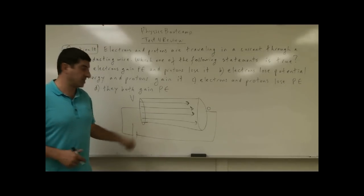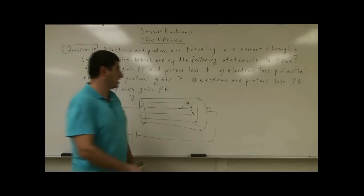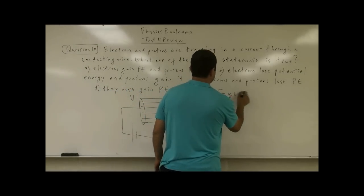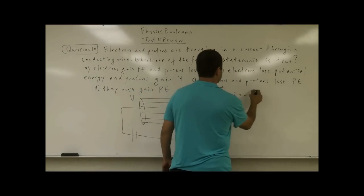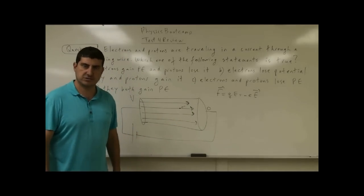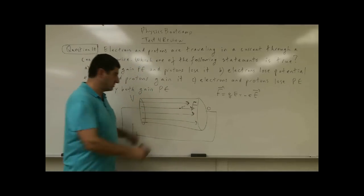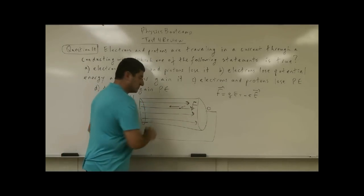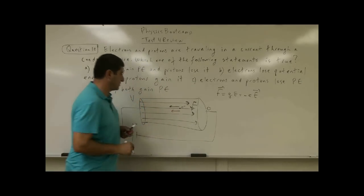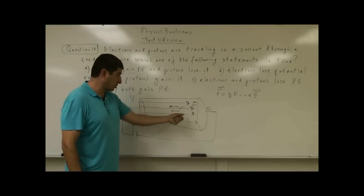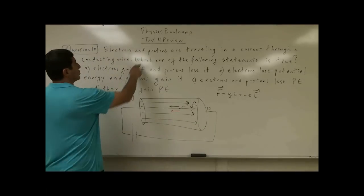Which way are electrons going to flow? Electrons always flow from lower potential to higher potential. Another way to see this: the force on the electron is F = qE. Since the charge of the electron is negative, the force on the electron is opposite to the direction of the electric field. Since the electric field is to the right, the electron feels a force to the left and moves to the left — toward higher potential.